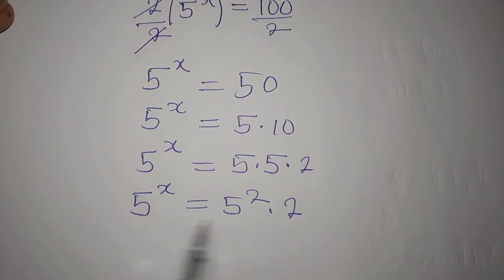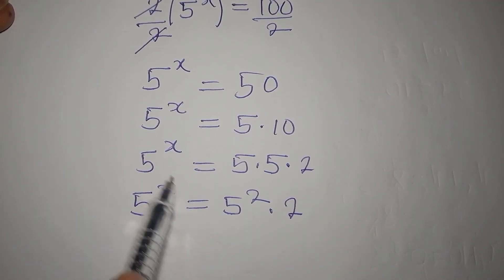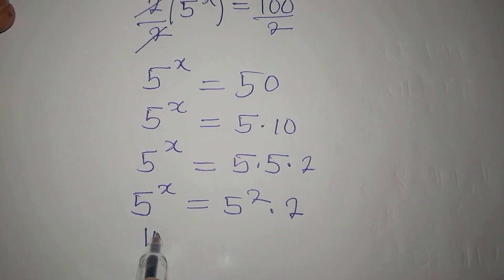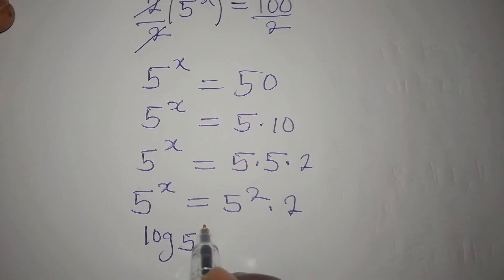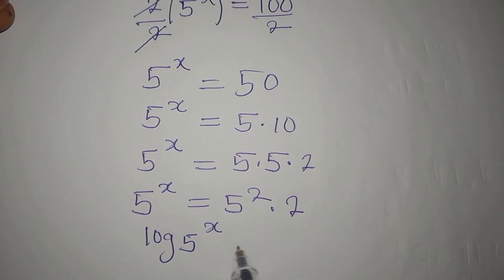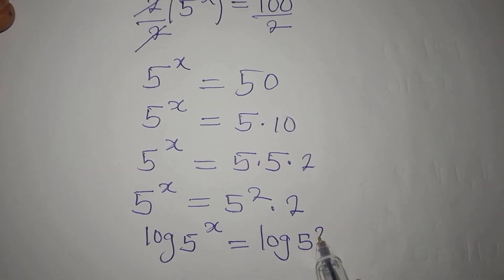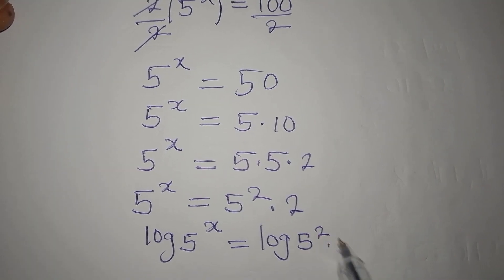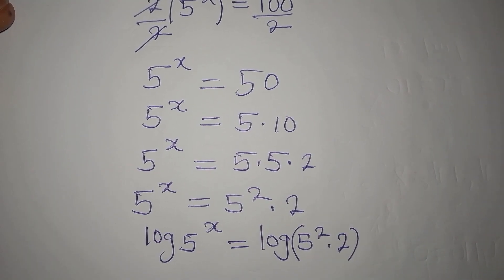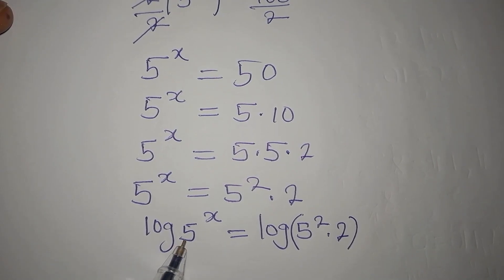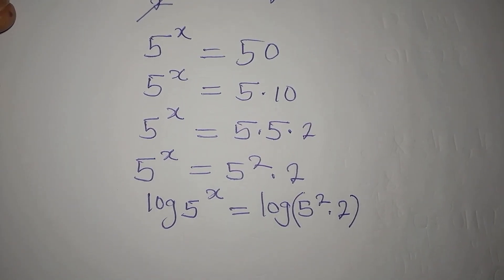Since this cannot be written in exact power-of-5 form, we are going to take the log of both sides. So we take the log of 5 to the power of x and the log of 5 squared multiplied by 2. Note that this 5 is not the base — both sides are to base 10.